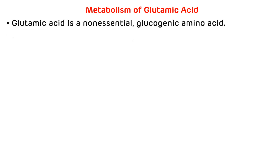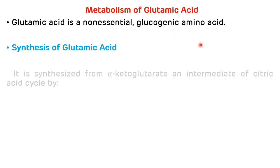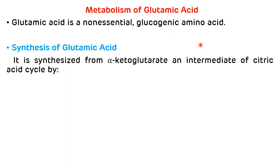First, metabolism of glutamic acid. Glutamic acid is basically a glucogenic as well as non-essential amino acid. Non-essential means we don't have to supply glutamic acid in the diet, and glucogenic amino acid means there is a synthesis of glucose from glutamic acid. First we will see synthesis of glutamic acid. Glutamic acid is synthesized from alpha-ketoglutarate, which is an intermediate of the citric acid cycle.